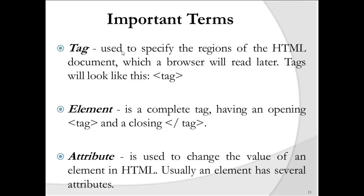An attribute is used to change the value of an element in HTML. An element has several attributes, which give extra or special features to a tag to make it more interactive.